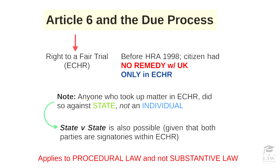It's interesting to note that before the enactment of the Human Rights Act of 1998, citizens within the UK had no remedy in terms of a human rights violation. The only redress they had was through the ECHR, or the European Court of Human Rights. Any matter taken up in the ECHR was one against the state and not an individual — for instance, it would be John versus UK. Conversely, matters against a state by another state were also possible, provided both parties were signatories of the ECHR.